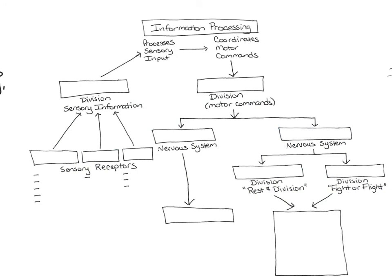Looking at the organizational chart, we start with sensory receptors. There are three different types. Special sensory receptors are found in the eyes, ears, nose, and mouth, and monitor smell, taste, vision, balance, and hearing. Visceral sensory receptors are found in internal organs and monitor things like pH changes, oxygen level changes, or pain and pressure.